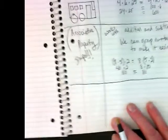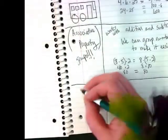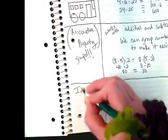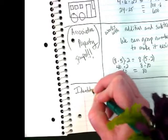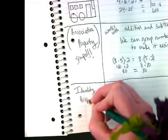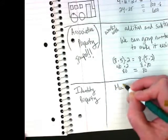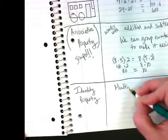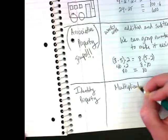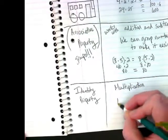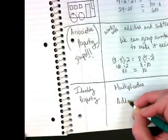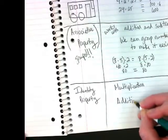Okay, we have one more property we're going to explore today. It is the identity property. And again, you guys already know this. You probably just didn't know it had a fancy name. You can do it with multiplication, and we have an identity property of addition.